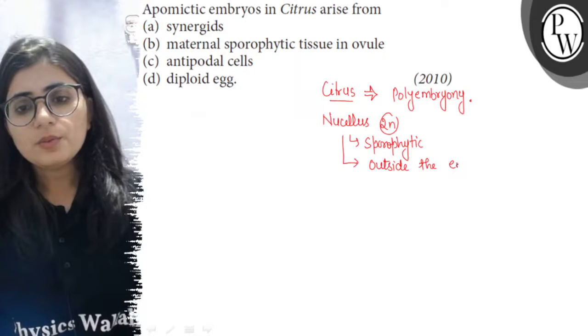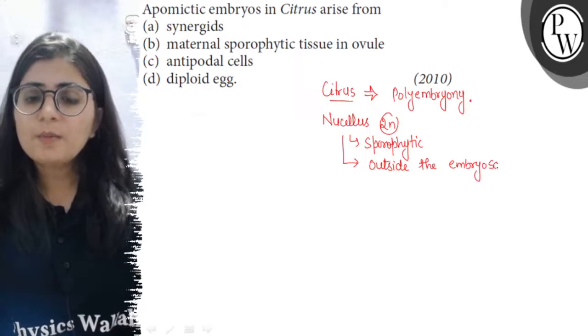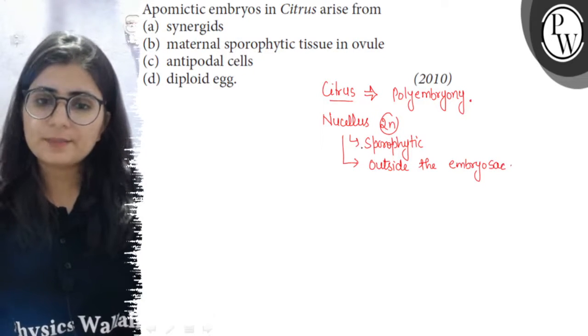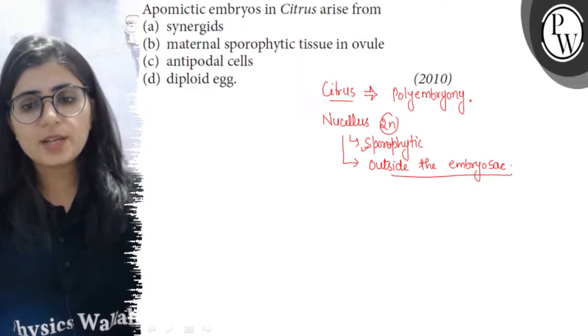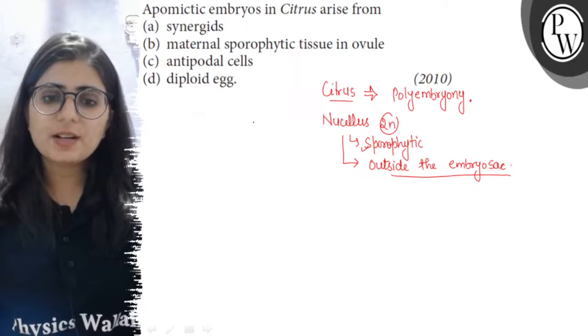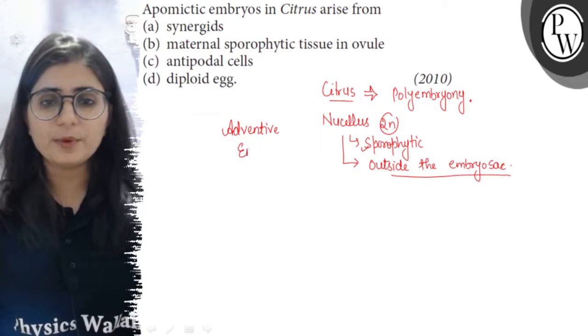When an embryo is formed from the sporophytic cells that are present outside the embryo sac, such a condition is called adventive polyembryony or adventive embryony.